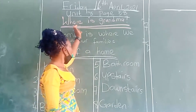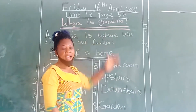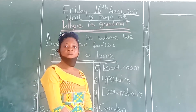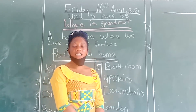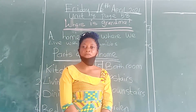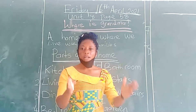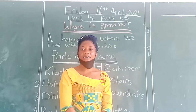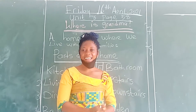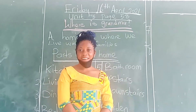The topic is: Where is Raman? Unit 8, page 58 of our Family and Friends class book. The topic says: Where is Raman?